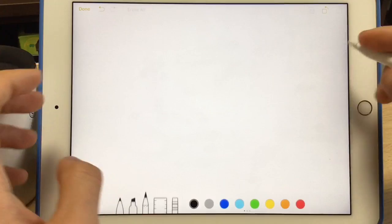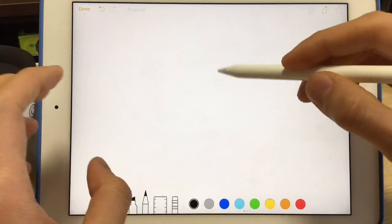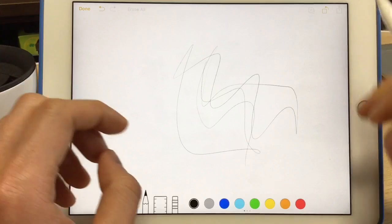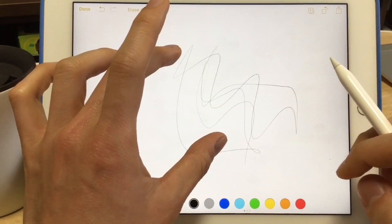I don't think it's really explained very clearly anywhere in particular. But when you're drawing, say you're drawing a picture in Notes on your iPad Pro, simply just put two fingers down.